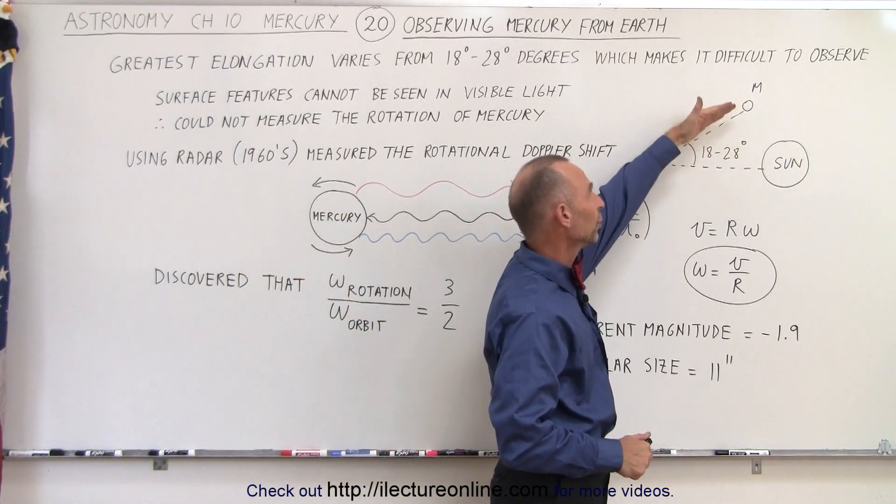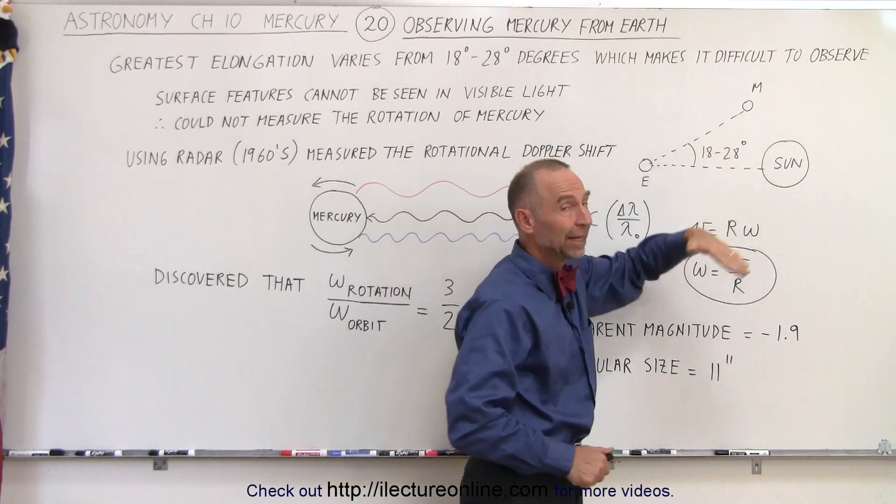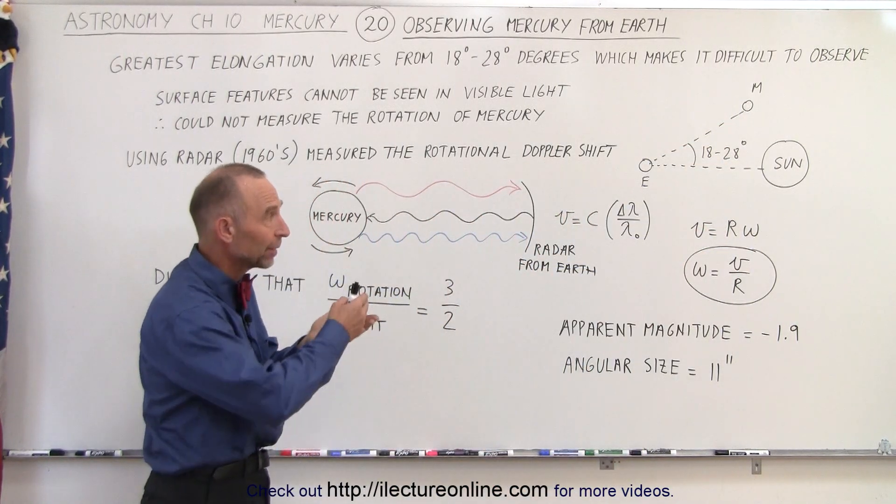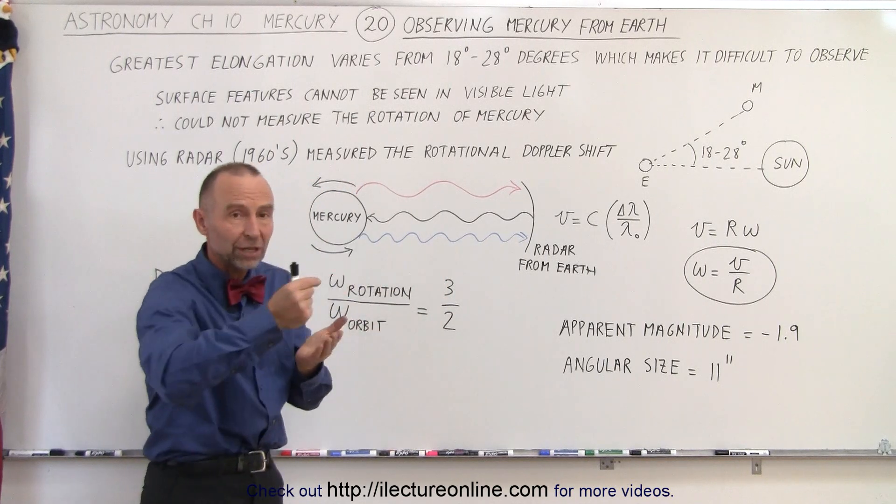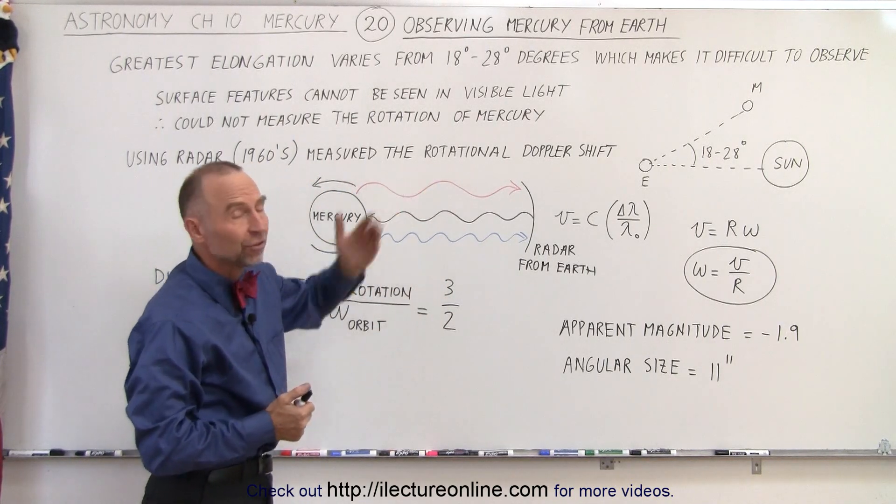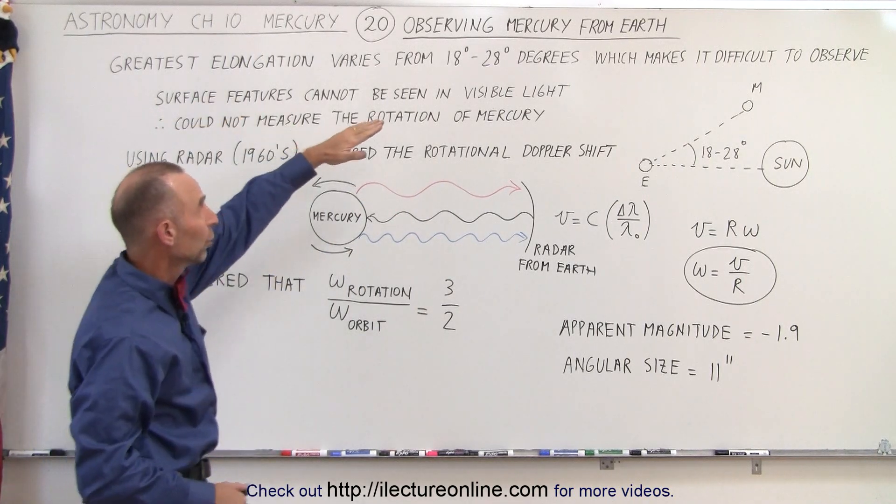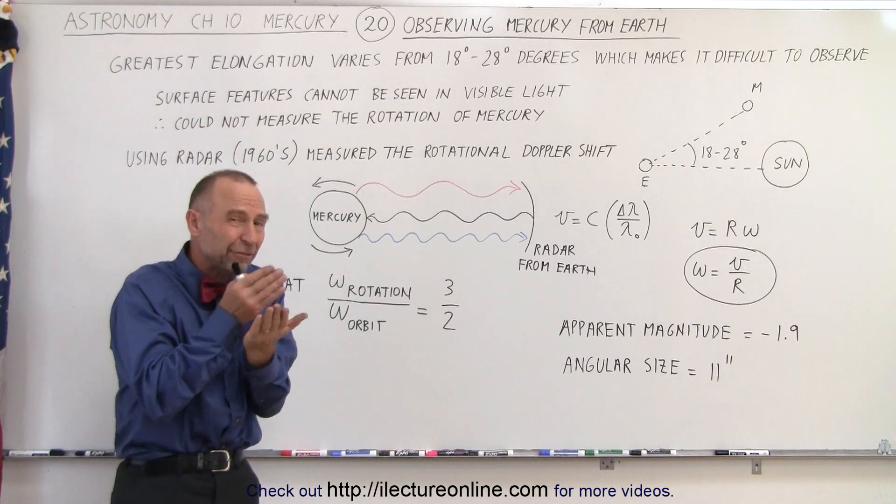the distance away and angle away from the Sun for Mercury is somewhere between 18 and 28 degrees, and of course that depends upon where Mercury is in its orbit around the Sun and where the Earth is in its orbit around the Sun. So the maximum elongation is actually relatively small, so it's never far away from the Sun,